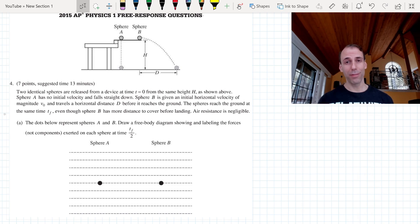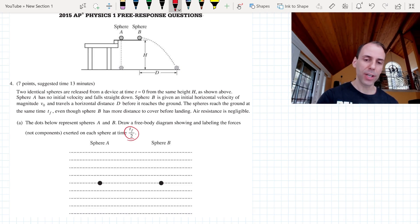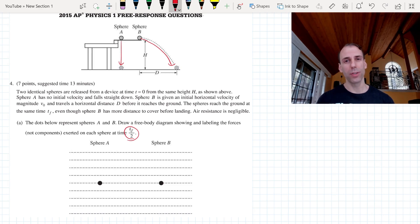All right, I hope you pause the video. Now this first part they're asking you draw a free body diagram for each sphere when half the time has elapsed. Very common trick on the AP exam they'll say t final divided by two or t final divided by four when one quarter of the time has elapsed. So there's a basic physics principle that they're trying to tease out here. It's your understanding that an object projected horizontally and an object that is dropped straight down vertically, there's no difference between the two.